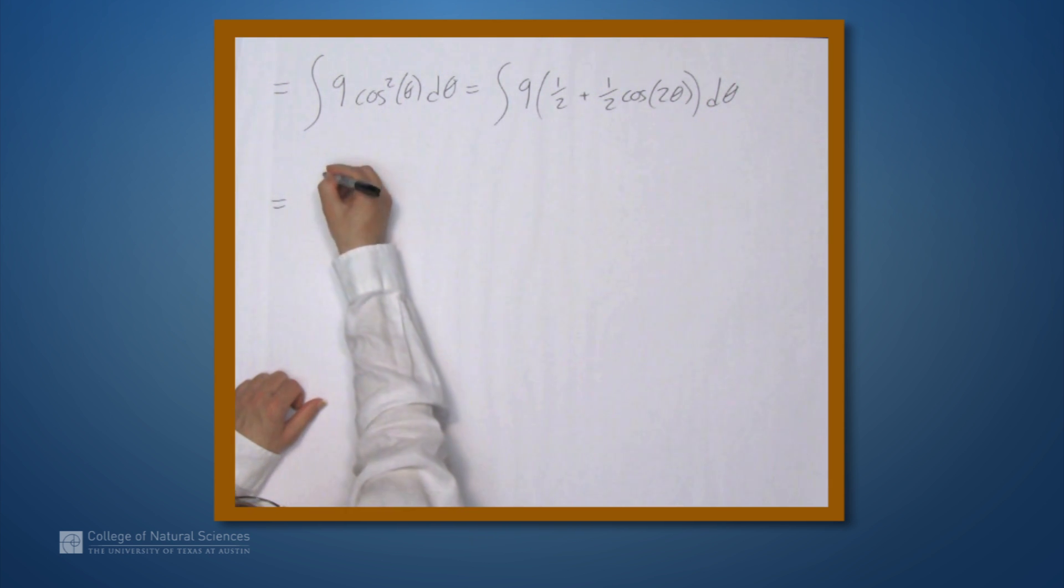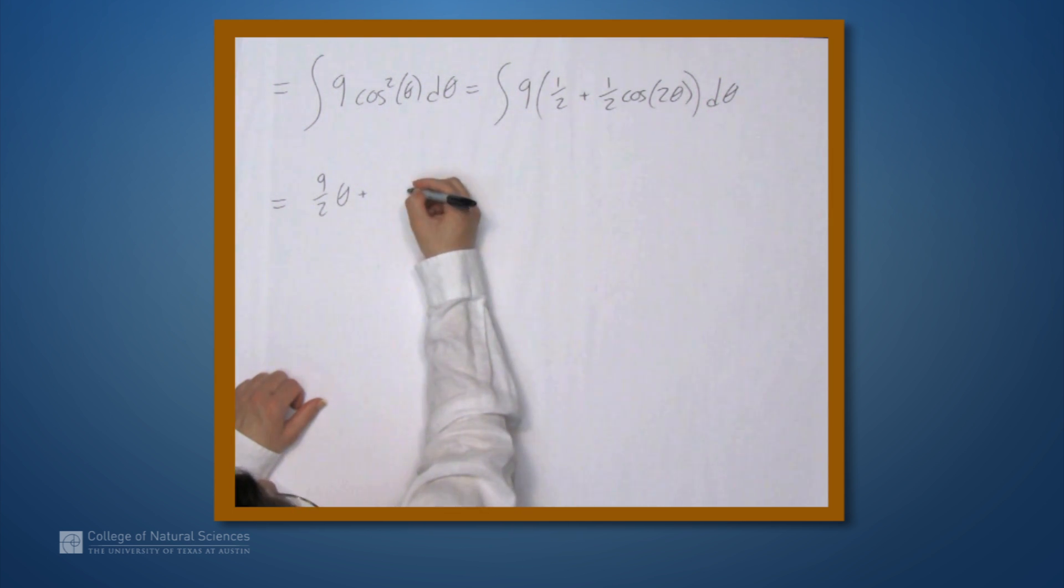And now we can integrate each of these terms individually. So we have 9 halves. That becomes 9 halves theta plus 9 halves cosine 2 theta, which becomes, let's be careful, this becomes something involving sine of 2 theta. And when we take the derivative of this, we want to get a coefficient of 9 halves. We know that when we take the derivative, we're going to get a copy of 2 outside. So we better make this coefficient 9 fourths.